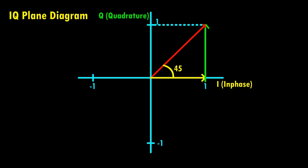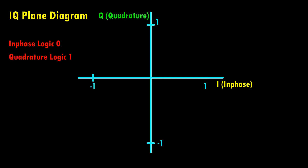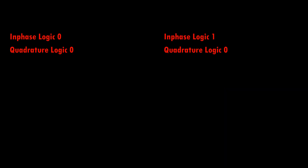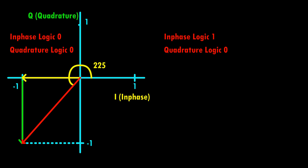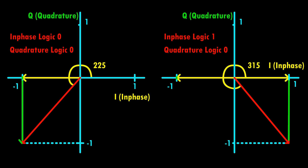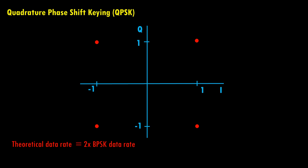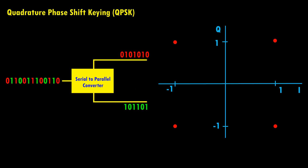Let's understand this quadrature combination with an IQ plane diagram. If the in-phase and quadrature bit stream values are both one, the resultant RF vector will be at 45 degrees — an RF carrier with 45-degree phase shift is created. When the in-phase bit stream value is logic zero and the quadrature value is logic one, the in-phase component is multiplied with −1 and quadrature with +1, resulting in an RF carrier with 135-degree phase shift. In this way, we change the RF carrier phase in four different combinations using two bits, theoretically doubling the transmitted data rate compared to binary phase shift keying.